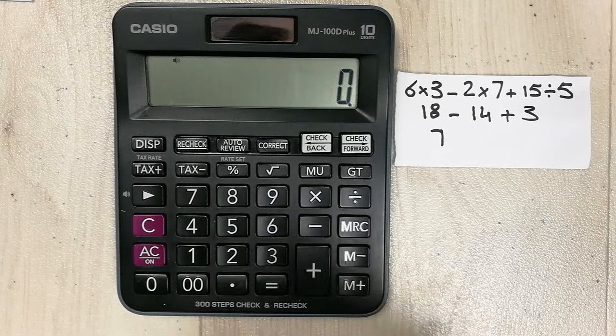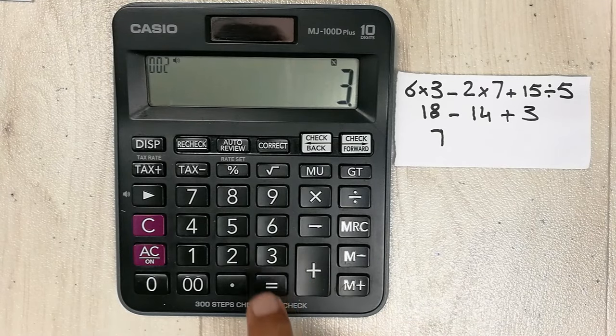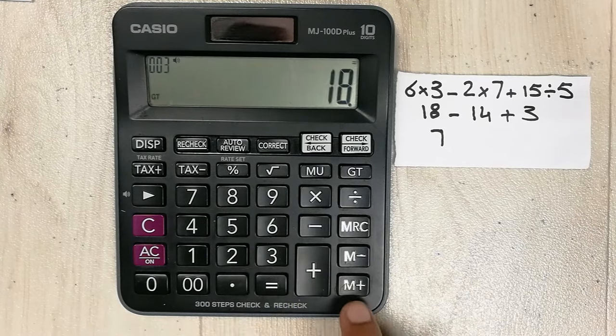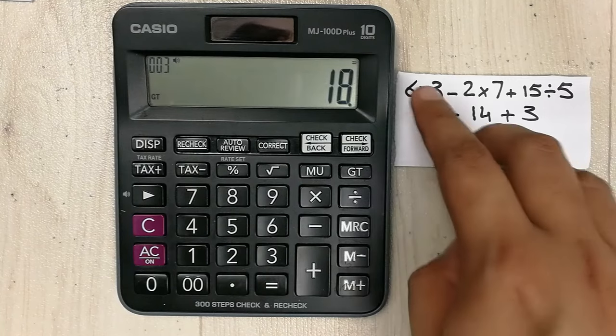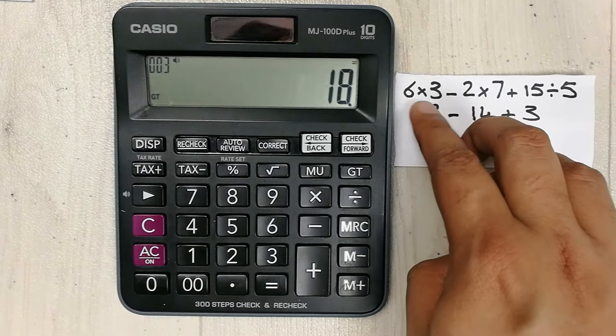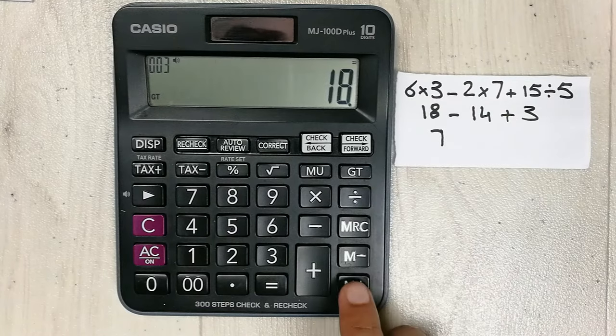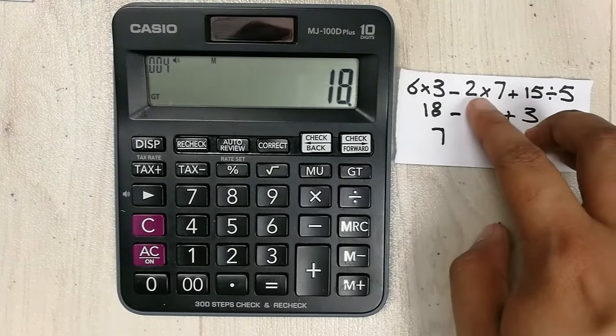Now I will do this on my calculator with these three buttons. So 6 multiplied by 3 equal, and then I use M plus button because the value over here is positive. We have a positive sign, so M plus.